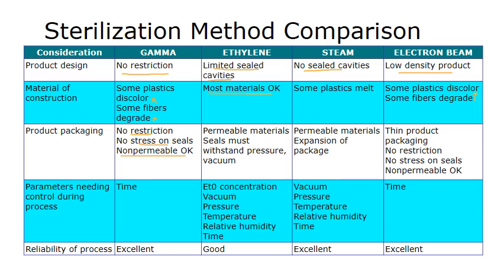For gamma, devices that are in non-permeable packaging will still get sterilized. For ethylene oxide, the packaging materials must be permeable and the seals must withstand pressure and vacuum. For electron beam, the packaging must be thin, there's no restriction on permeability, and there's no stress on the seals.